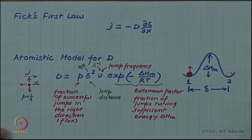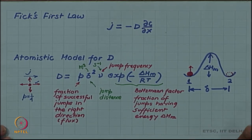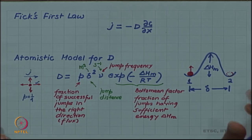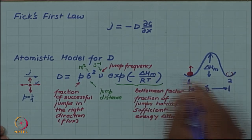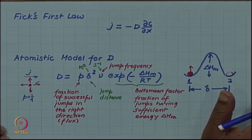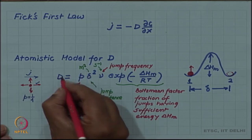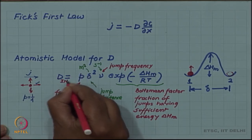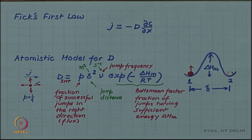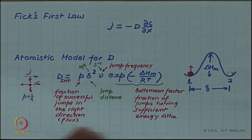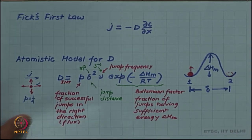In interstitial diffusion, taking the example of carbon in austenite, even with the maximum amount of carbon the fraction of vacant interstitial sites is 90 percent. So there is a 90 percent probability of finding a vacant site, making the assumption that the next site is vacant essentially 100 percent true for interstitial diffusion. So what we have written is actually D_interstitial.